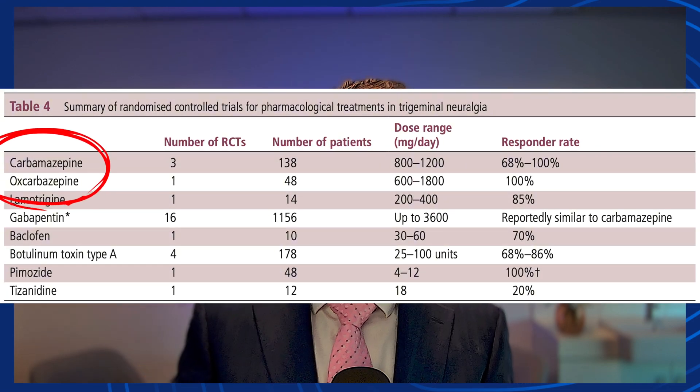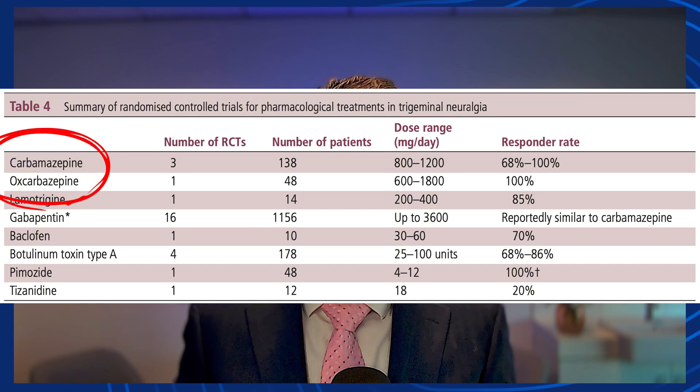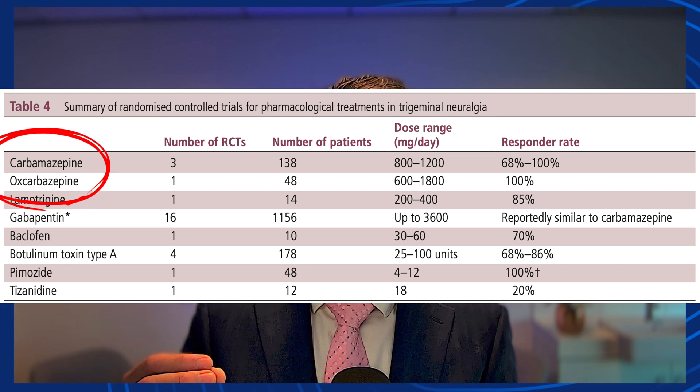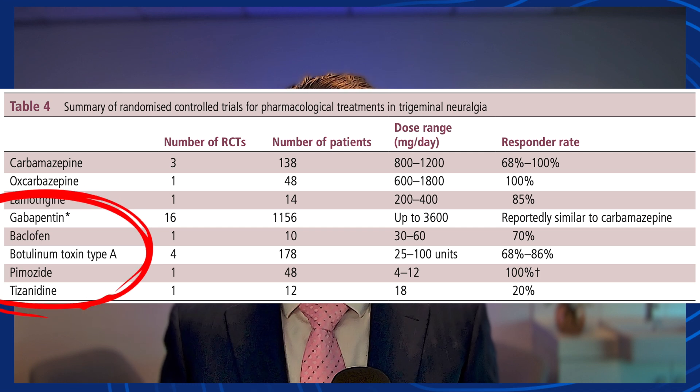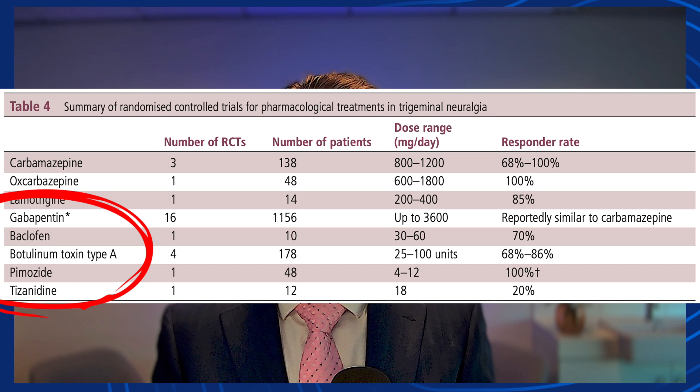Regarding medications for trigeminal neuralgia, the two main ones are carbamazepine and oxcarbazepine, which work on sodium channels of nerves and can be very effective. Other studied medications include lamotrigine, gabapentin, pregabalin, baclofen, and Botox injections. If medications are not effective and surgical decompression is not indicated, interventional approaches such as radiofrequency ablation of the nerves associated with the trigeminal nerve can be considered.